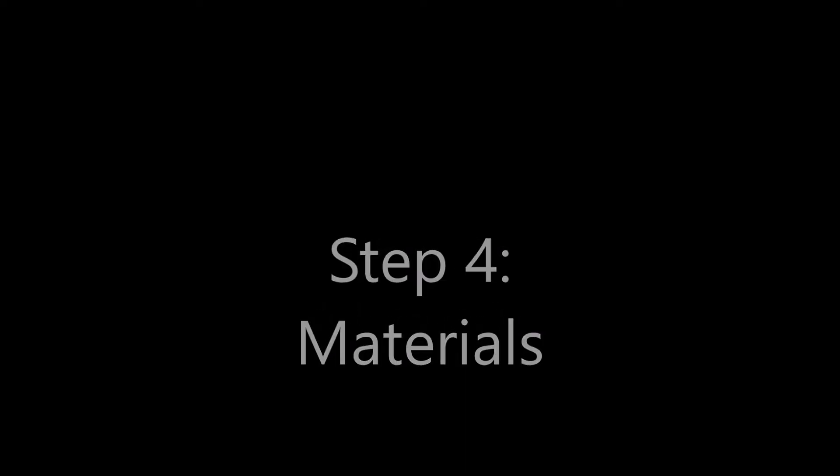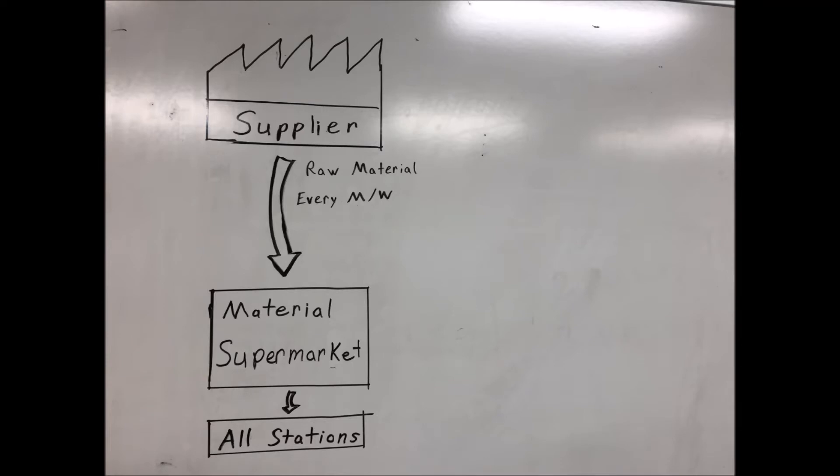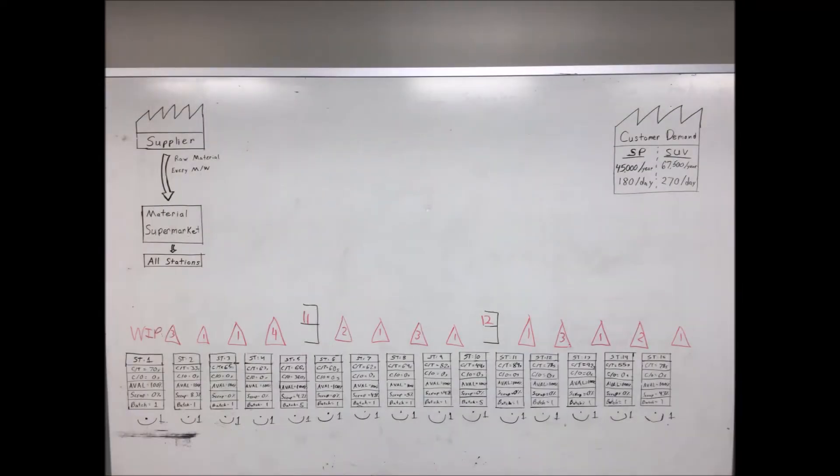Step 4: Materials. Map out the current materials process. For the LEGO Lab, we assume that the supplier supplies materials every Monday and Wednesday to the LEGO Lab's materials supermarket, which then distributes the material to all stations during the production run.